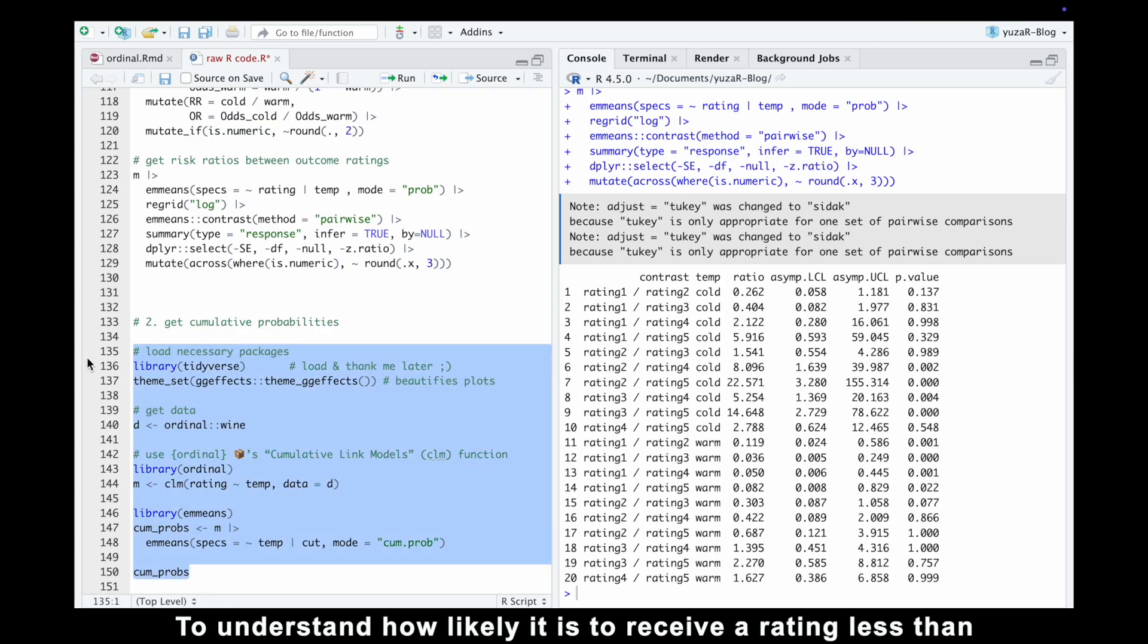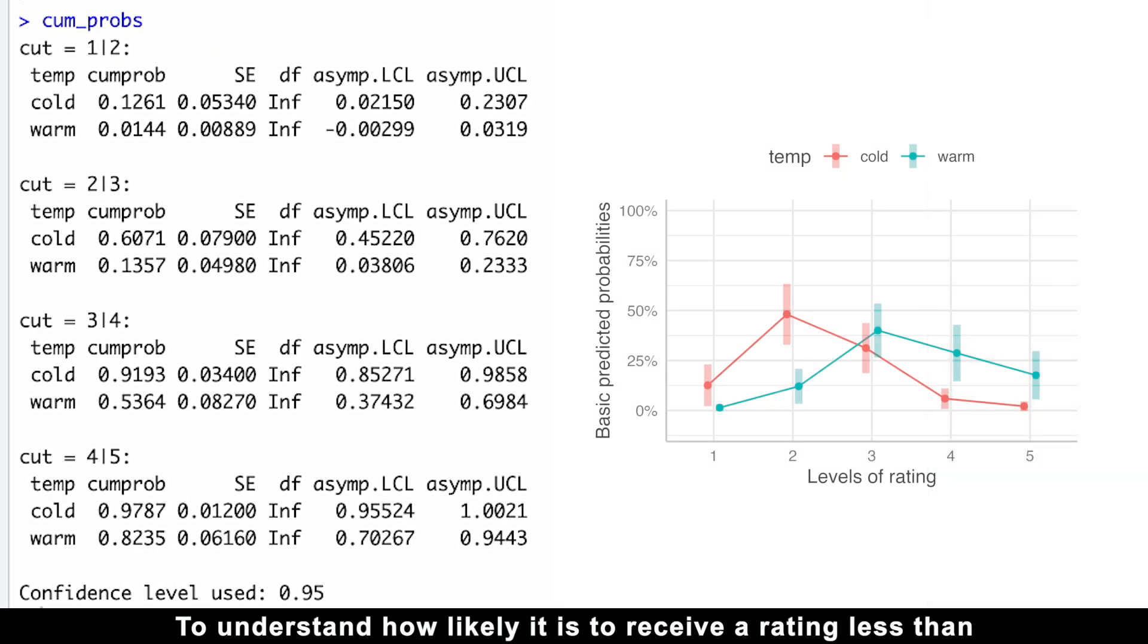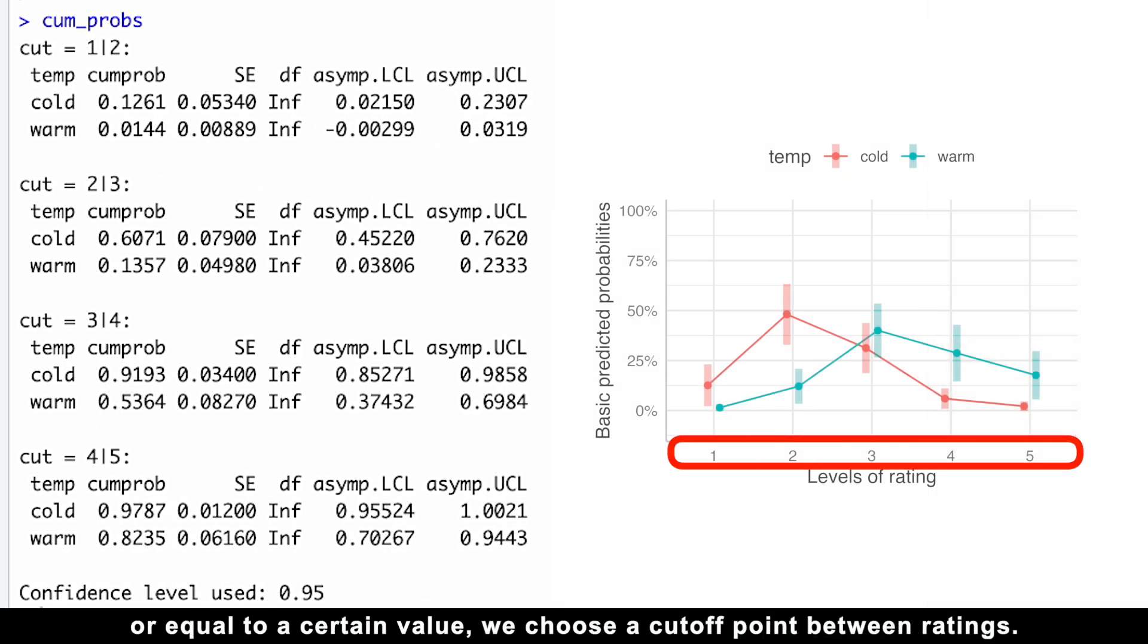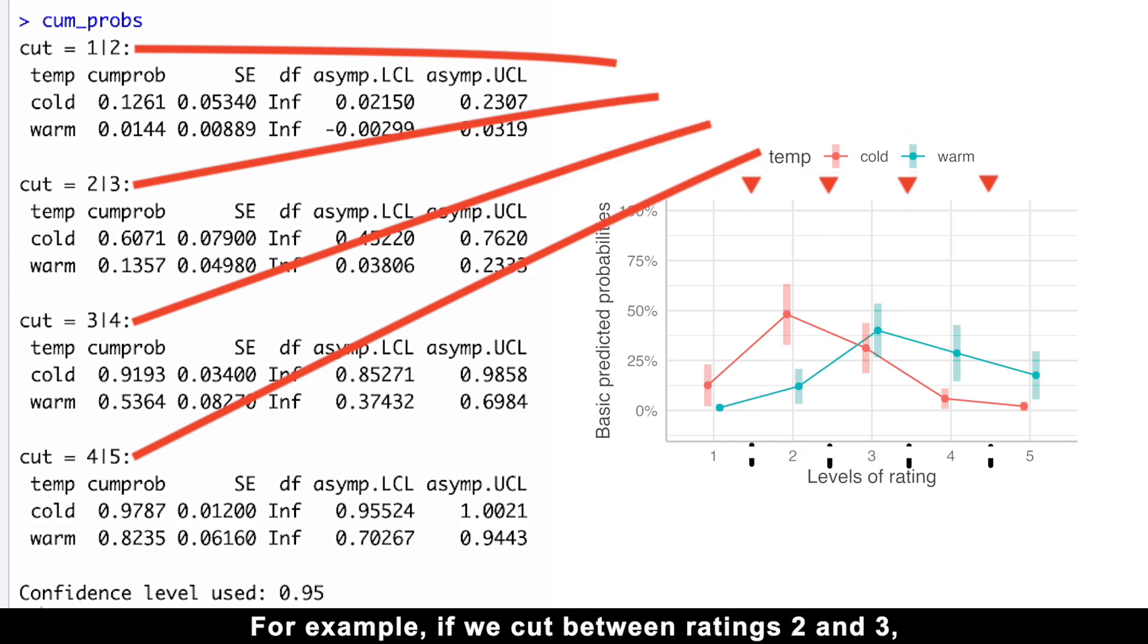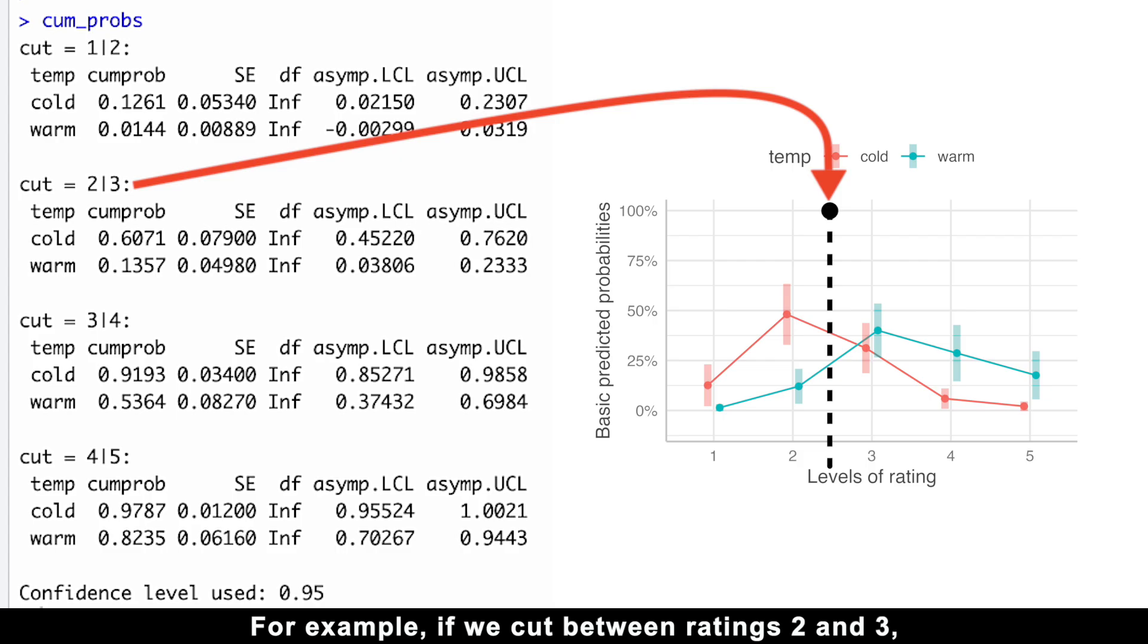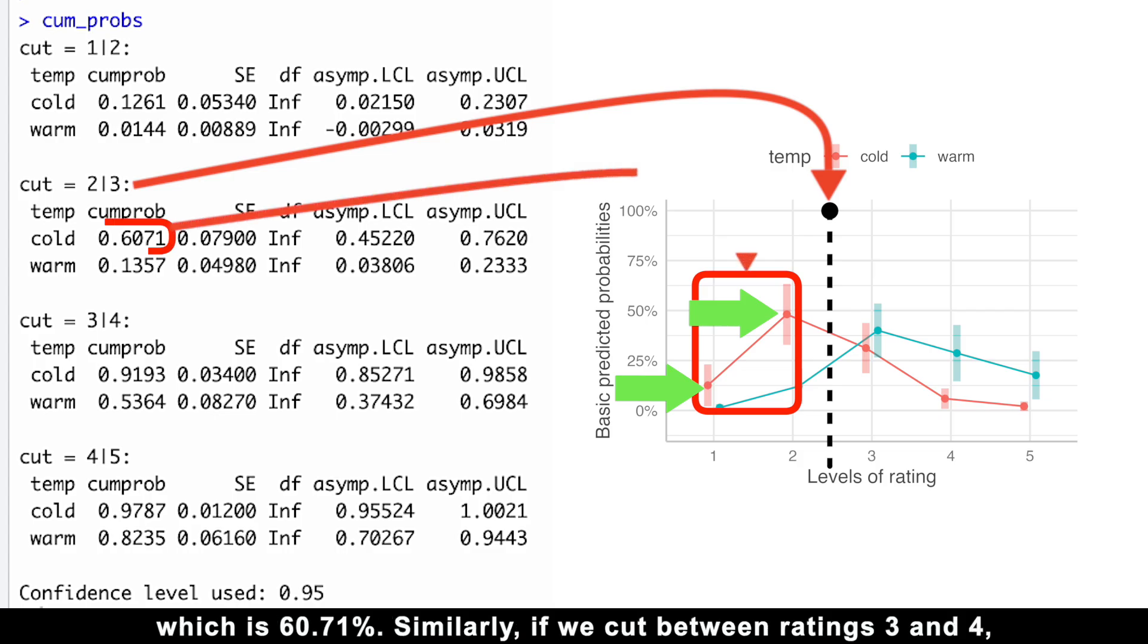To understand how likely it is to receive a rating less than or equal to a certain level, we choose a cutoff point between ratings. For example, if we cut between ratings 2 and 3, we get the cumulative probabilities of all ratings at or below 2, which is 60.7%.